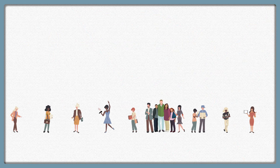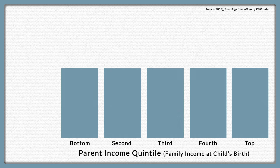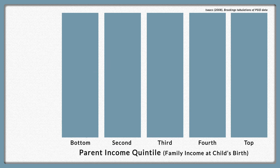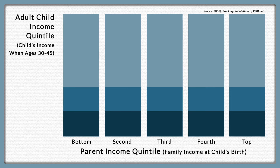We can look at this by lining up everyone from lowest income to highest income and breaking them into five equal groups. If there was no mobility and everyone stayed in the same position as their parents, each of the bars in the graph would be made up of people who started life in that group. But if everyone had an equal chance of ending up in each of the five income groups, the vertical bars would be evenly split into fifths.